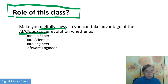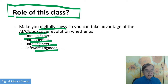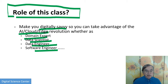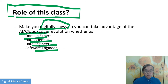You can be a domain expert, a data scientist, a data engineer, a software engineer. All of these can be equally successful or more successful. Probably the domain expert might be the most successful. But you must be digitally savvy — you must know enough about what's going on to make good decisions. That's the purpose of this course.